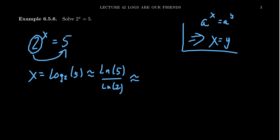You can approximate the natural log of 5 and the natural log of 2 on your calculator, then take their quotient. Note that the natural log of 5 divided by the natural log of 2 is exactly equal to log base 2 of 5. When you consult your calculator, you get approximately 2.322. So that is the solution to this equation.